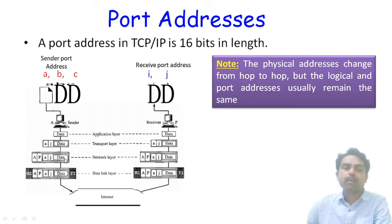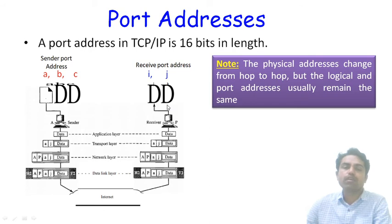This complete datagram comes to the data link layer, which adds the physical addresses of the sender and receiver along with a trailer for error control. The complete data is forwarded via the internet and reaches the receiver's data link layer, which removes the physical addresses. Then at the network layer, the logical addresses are removed. Then at the transport layer, the port addresses are removed, and finally the data is received. The message is carried from sender to receiver through all layers using port addresses, logical addresses, and physical addresses.